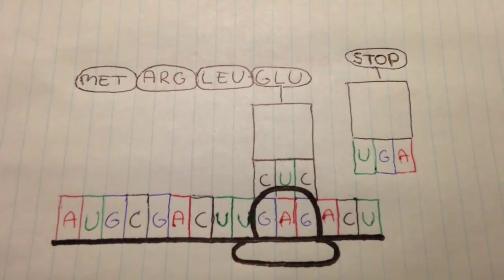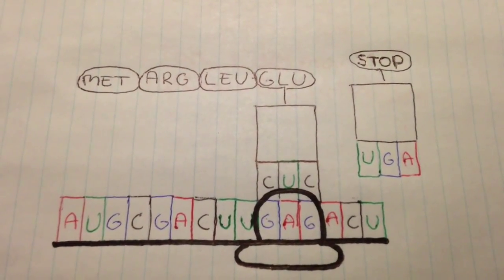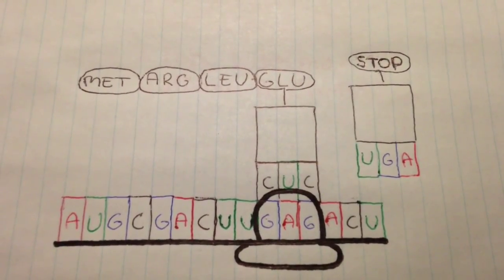As the tRNA leaves, the amino acid binds to the next amino acid, eventually creating a polypeptide with peptide bonds binding them together.